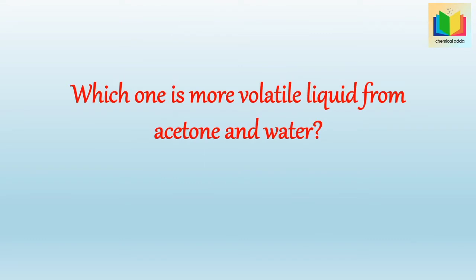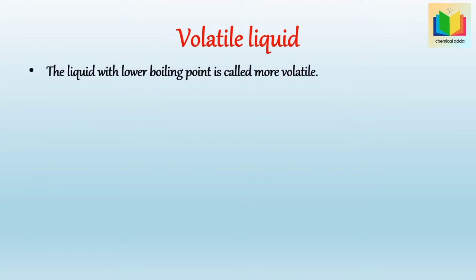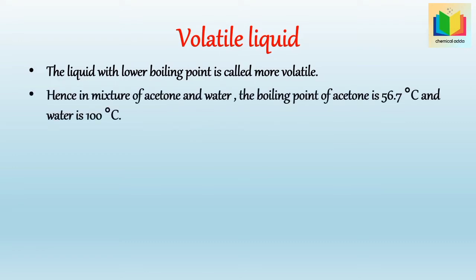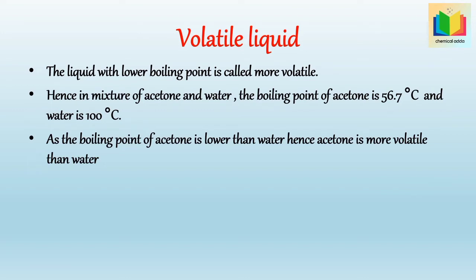Which one is the more volatile liquid from acetone and water? The liquid with a lower boiling point is called more volatile. Hence, in a mixture of acetone and water, the boiling point of acetone is 56.7°C and water is 100°C. As the boiling point of acetone is lower than water, acetone is more volatile than water.